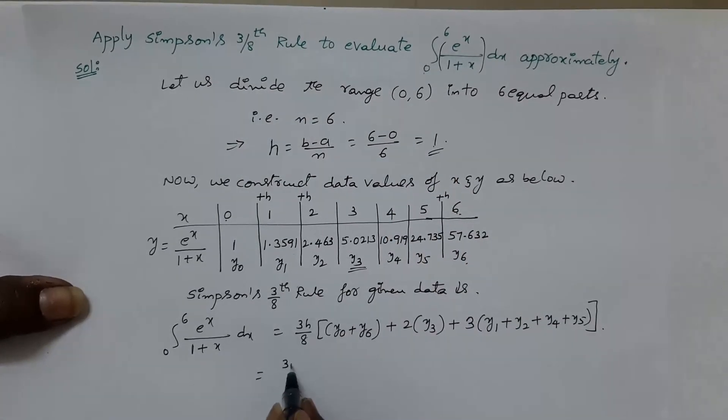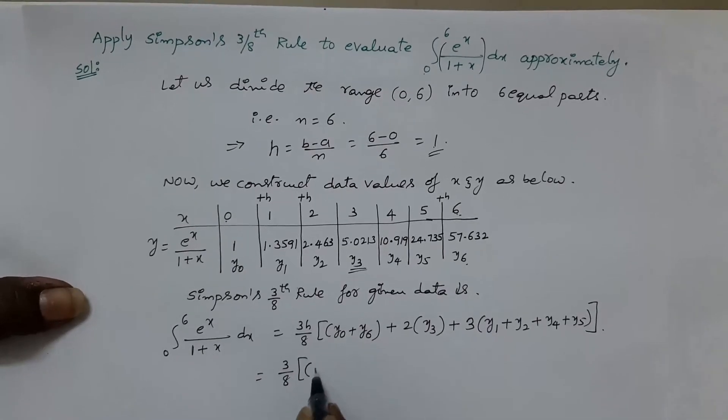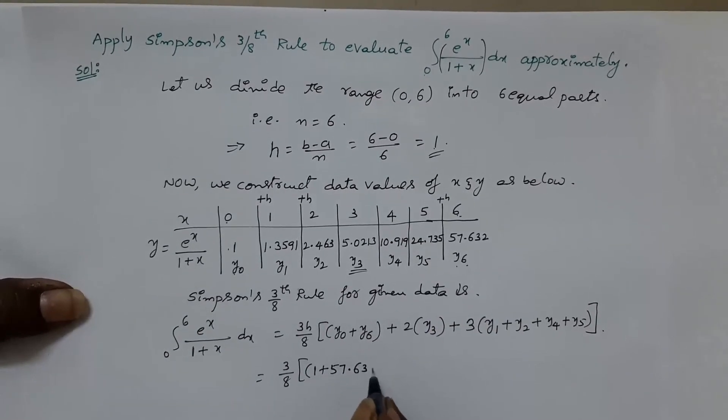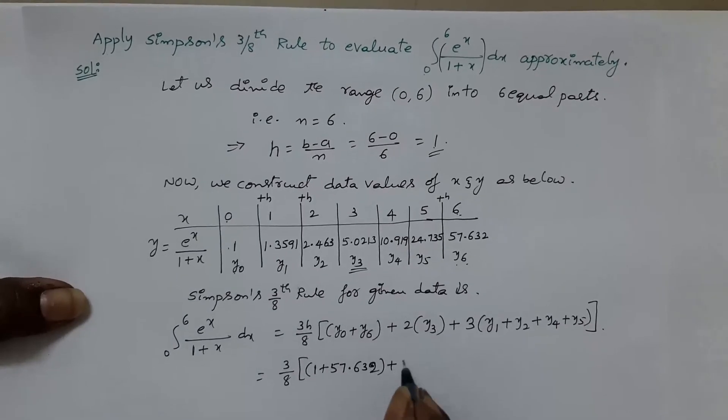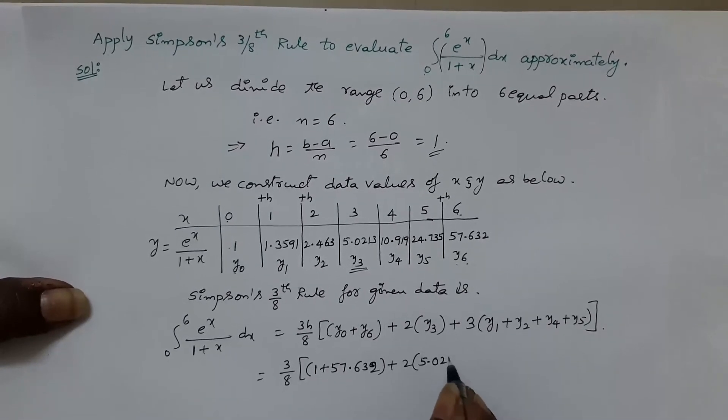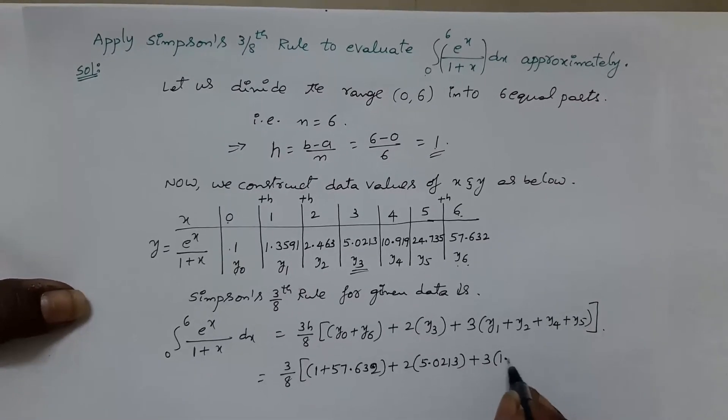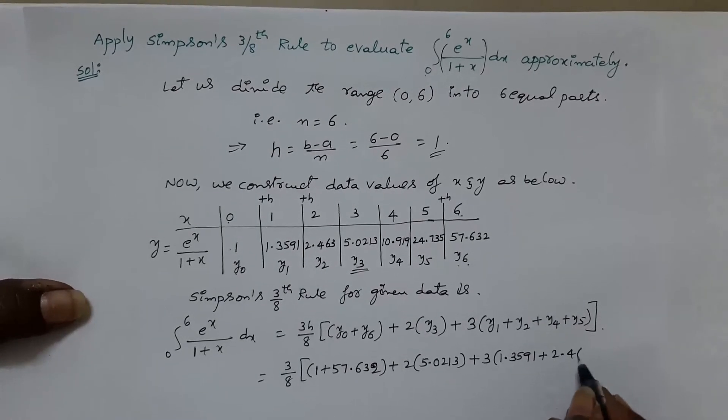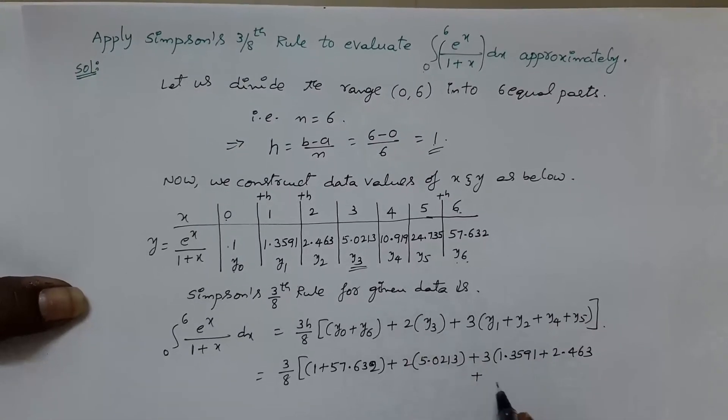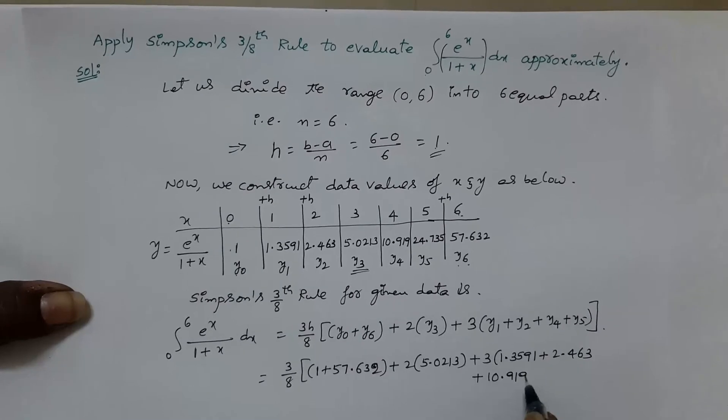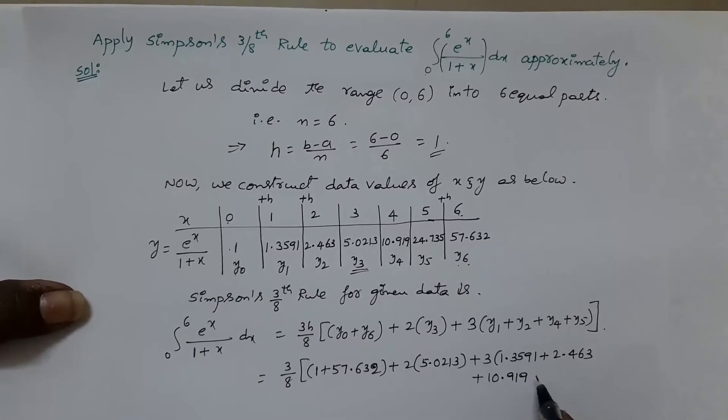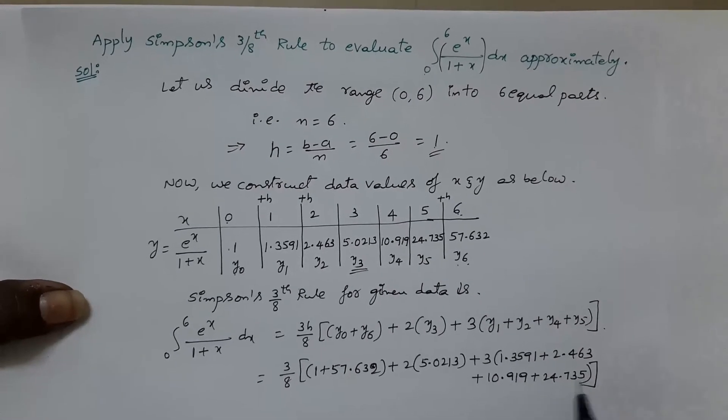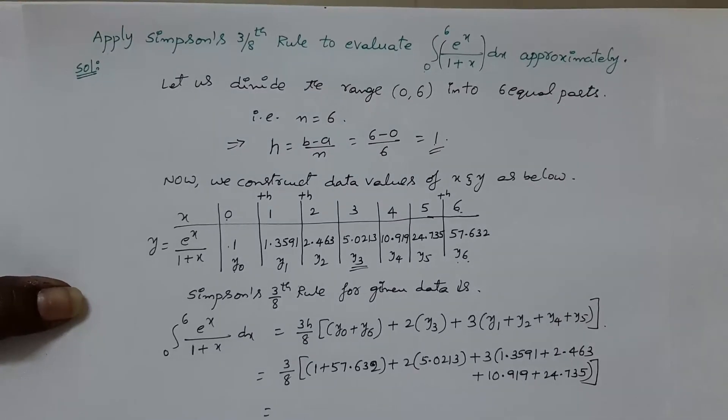Substitute these all values and calculate. h value is 1. So, 3 times of 1 is only 3 by 8. First value is 1 and last ordinate, 57.632 plus 2 times of y3 is 5.0213 plus 3 times of y1, 1.3591 plus y2, 2.463 plus y4 value is 10.919 and y5 which is 24.735 close the bracket.